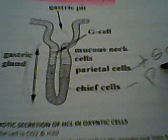When we consider the mucus neck cells, there is isoosmotic secretion of hydrochloric acid. Hydrochloric acid is very acidic — the pH in the stomach is usually around 1. The physiological pH in the body is around 7.4, so a pH of 1 is extremely acidic. Gastric secretions at pH 1 are therefore very acidic.